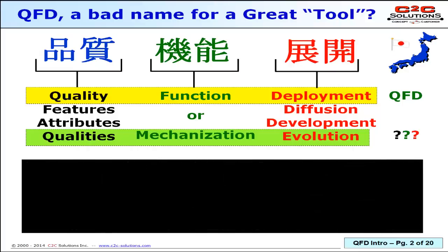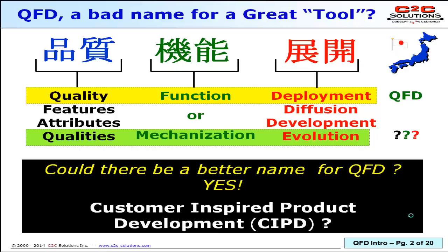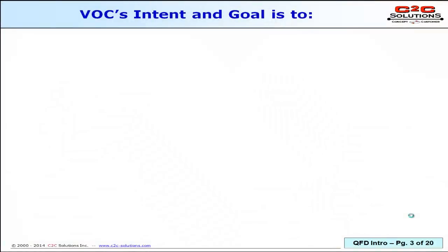If I could, I'd love to change the name of QFD, but you're never going to change it because it's been around too long. If I could change the name, I'd call it Customer Inspired Product Development — that's the essence of QFD. If you like acronyms, call it CIPD. I've had some companies that did exactly that, but most people know this as QFD.